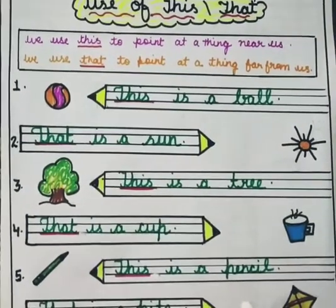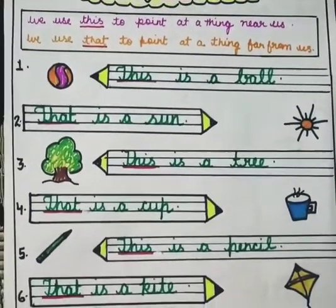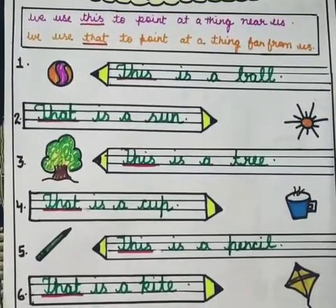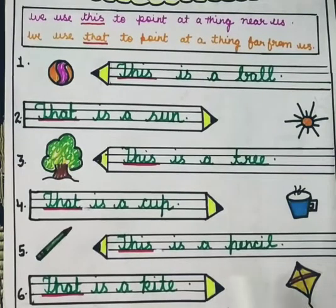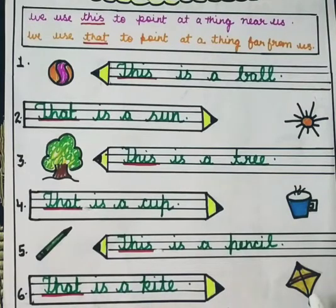Next example: that is a kite. You can see it — that is a kite. We have used that because the kite is far away. That is a kite.